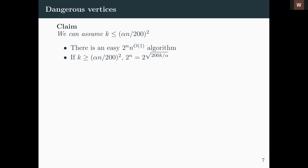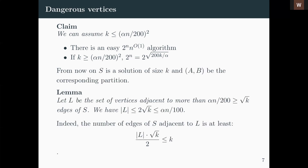More precisely, we call these 'dangerous vertices.' The first claim is that we can assume the size of the solution S is smaller than alpha*n/200 — a constant times n squared. The reason is that there exists an easy 2^n algorithm: just try all partitions (A, B) and count edges inside. If k is larger than some constant times n squared, then n is O(sqrt(k)), and the 2^n algorithm becomes a 2^O(sqrt(k)) sub-exponential algorithm. So we can always assume k is not too large compared to n squared.